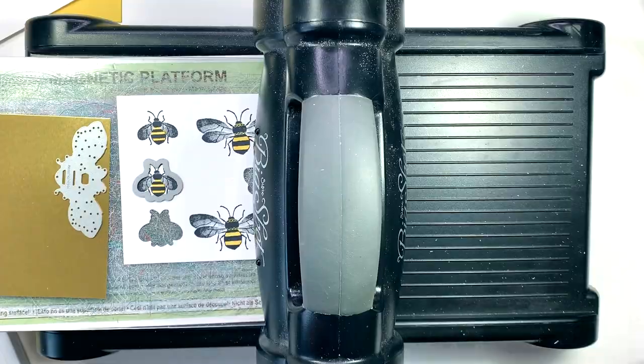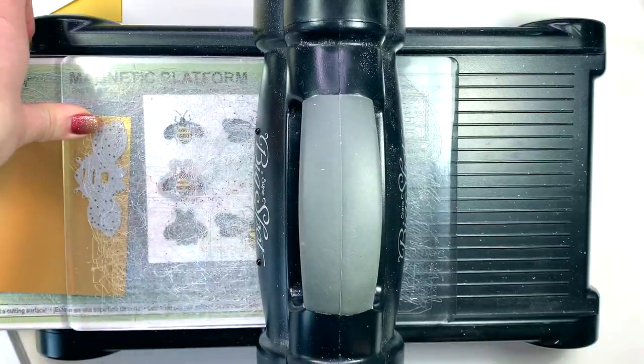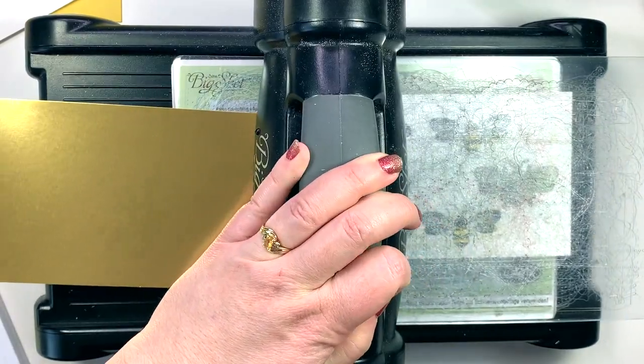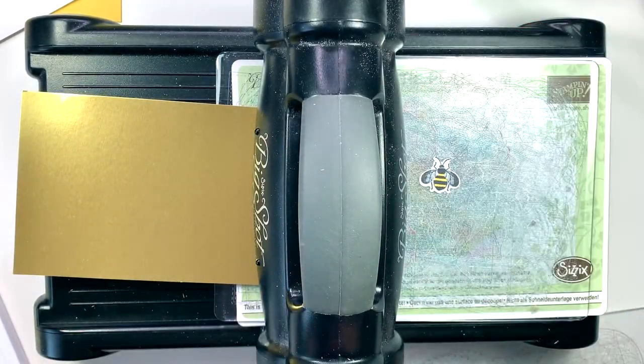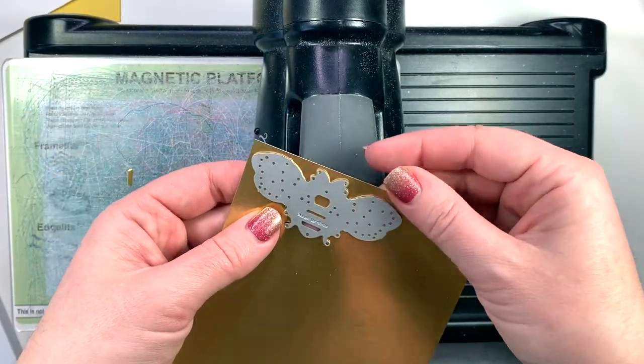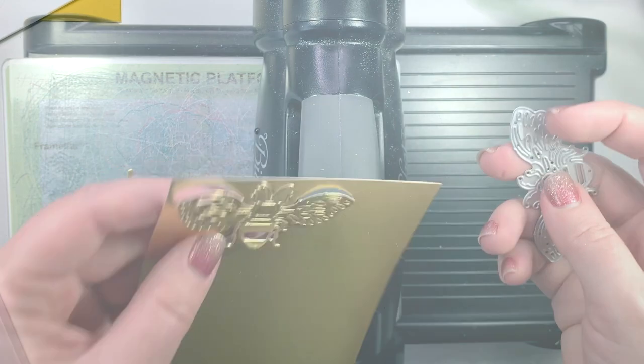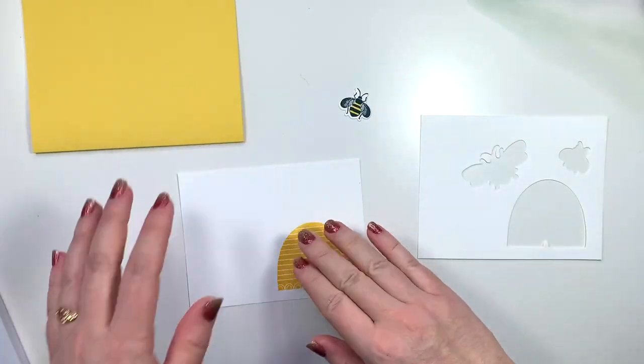And now I'm going to cut out a bee that I had previously stamped and colored in with Daffodil Delight along with a gold foil bee using the detailed bee die. I really thought that this turned out beautiful on the gold foil. All that detail really shines through.